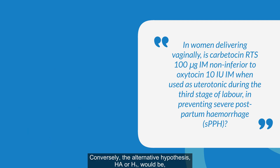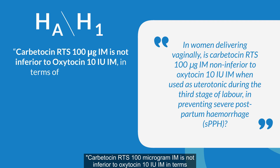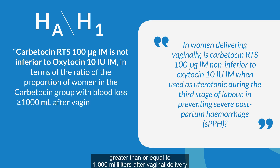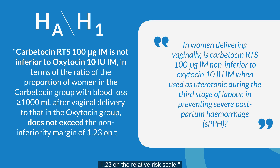Conversely, the alternative hypothesis, HA or H1, would be: Carbeticin RTS 100 microgram IM is not inferior to oxytocin 10 IU IM, in terms of the ratio of the proportion of women in the carbeticin group with blood loss greater than or equal to 1000 milliliters after vaginal delivery to that in the oxytocin group, and does not exceed the non-inferiority margin of 1.23 on the relative risk scale.